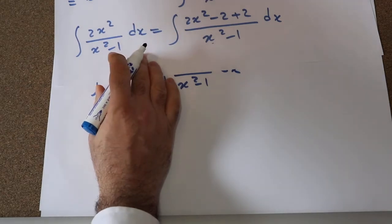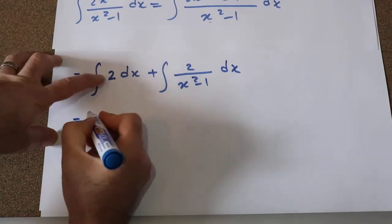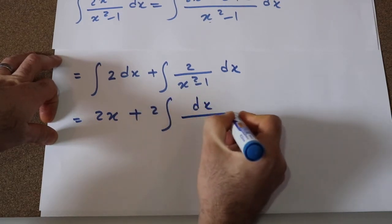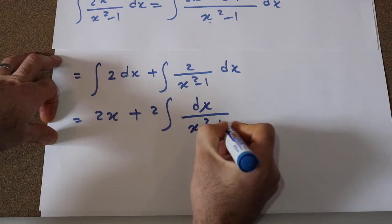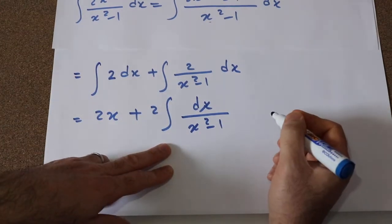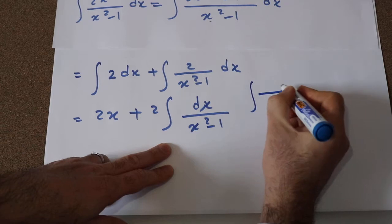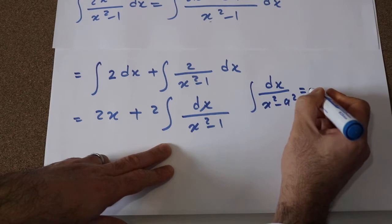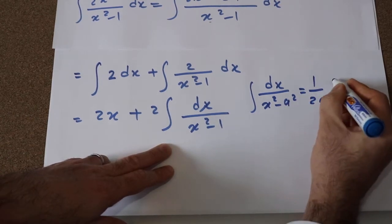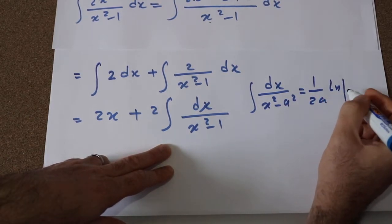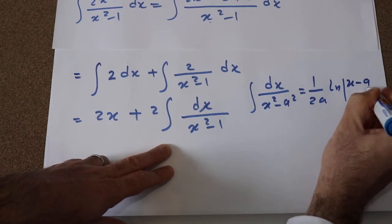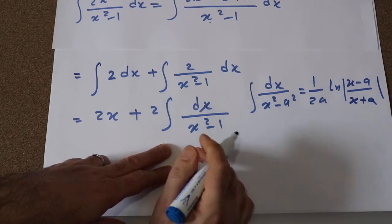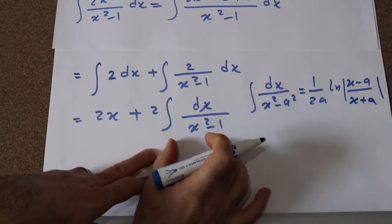The integral of 2 dx is equal to 2x, so that expression equals 2x plus 2 times the integral of dx over (x² - 1). From the table of integrals, we know that the integral of dx divided by (x² - a²) is equal to 1/(2a) times ln|( x - a)/(x + a)|.